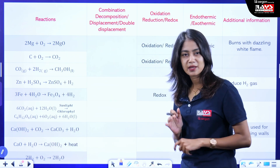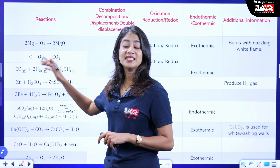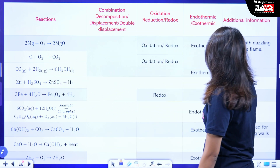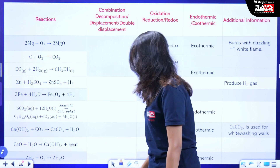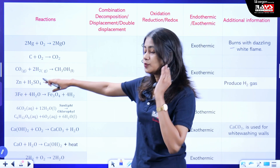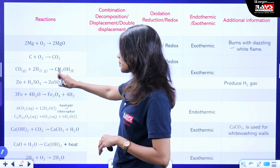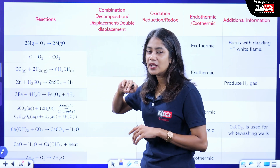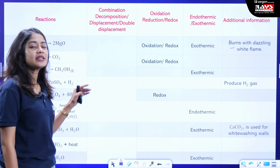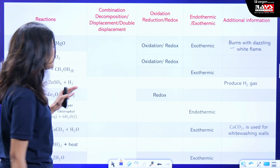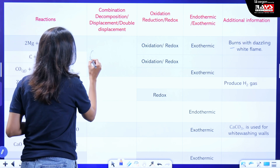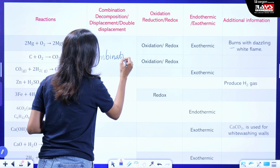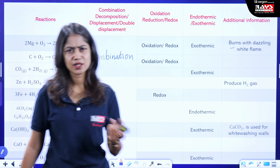The first chemical equation is magnesium burns in the presence of oxygen to form magnesium oxide. Magnesium burns with a dazzling white flame — note that down. The next equation is carbon combines with oxygen to form carbon dioxide, and carbon monoxide combines with hydrogen to form methanol. By observing these three chemical reactions, we can categorize them as combination reactions, where reactants combine to form one product.